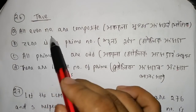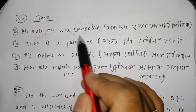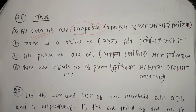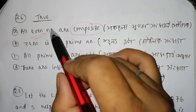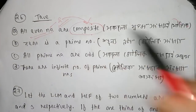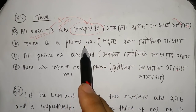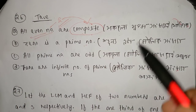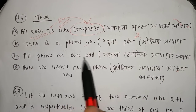All even numbers are composite. By using composite numbers — only 2 is a prime even number. So 2 is the only prime that is even. All other primes are odd.